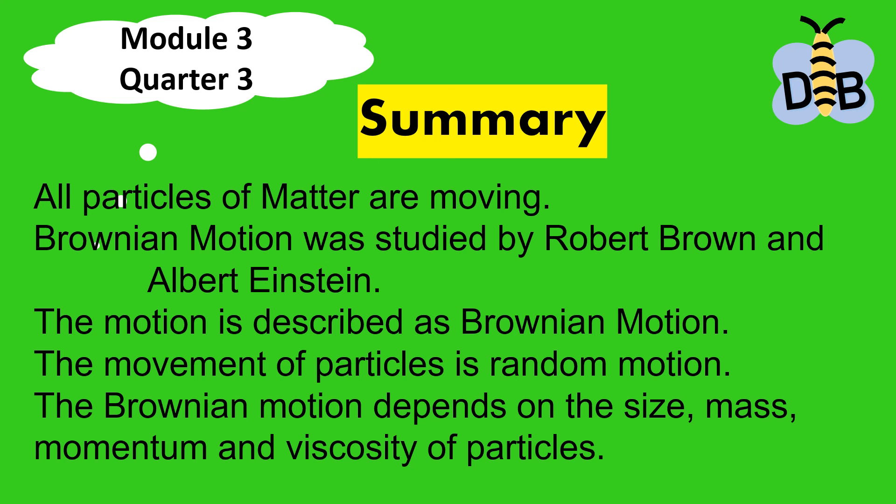To summarize, we must remember that all particles of matter are moving. This was proven by Robert Brown and Albert Einstein through their experimentations, and their findings are synthesized in Brownian motion, which states that all particles move in random directions. The cause of this motion is the collision of particles in random positions. Real-life examples include the diffusion of dye in water, perfume diffusing in air, and coffee dissolving in water. The movement of particles also depends on the size of particles, the mass of particles, momentum, and the viscosity of the fluid.